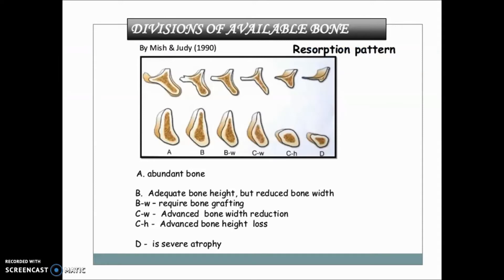The division of available bone by Mish and Zuri classification is important. Six categories exist: abundant bone; adequate bone height but reduced bone width; reduced bone width requiring grafting; advanced bone width reduction; advanced bone height reduction; and atrophied bone. Remember — when bone resorbs, width reduces first, followed by height.